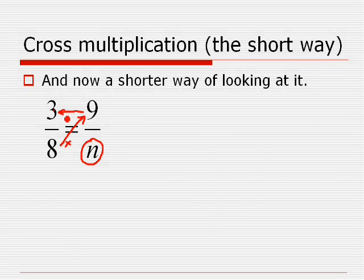So here we would have 8 times 9 divided by 3. It's basically the same process as before, but shortened. So we end up with 72 divided by 3 is equal to 24. So n equals 24.